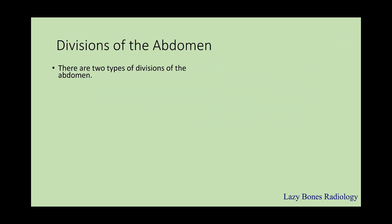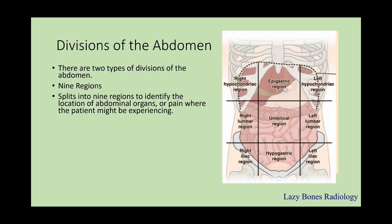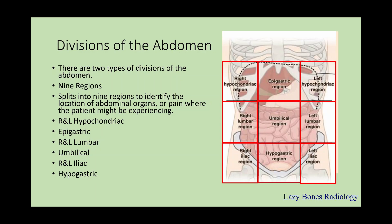The second division is known as the nine-region division of the abdomen. This splits the abdomen into nine different regions to identify the location of abdominal organs or pain with greater precision. These include the right and left hypochondriac regions, the epigastric region, the right and left lumbar regions, the umbilical region — where your belly button is located — the right and left iliac regions, and finally the hypogastric region. It is important to be familiar with both divisions because they allow you to identify structures with precision and accuracy.